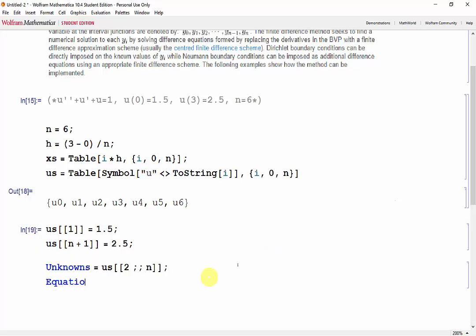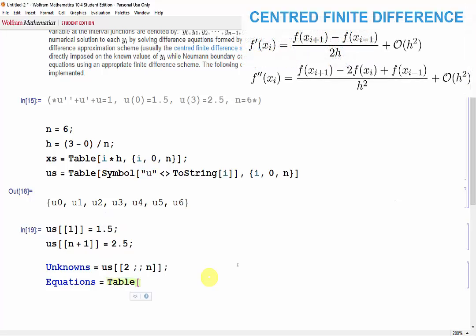So we'll create our equations using the table function. And if we recall, the second derivative of the centered finite difference formula would be u s of i plus 1 minus 2 u s of i plus u s of i minus 1, all divided by h squared.